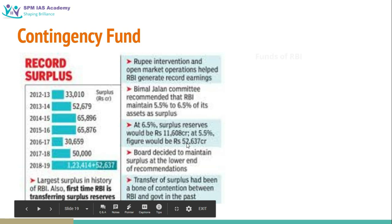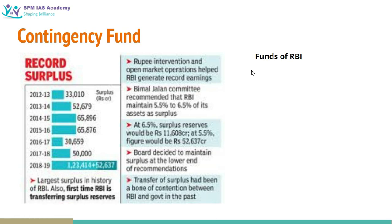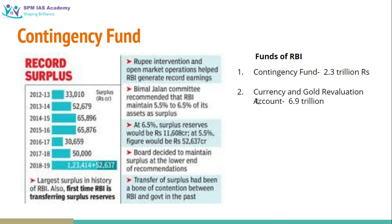Let us understand the contingency fund. Before understanding the transfer from the contingency fund, let us look at the types of funds available with RBI. The first type is the contingency fund — right now RBI has about 2.3 trillion rupees as contingency fund. The second fund is the currency and gold revaluation account. RBI keeps some gold as well, and this currency and gold fund is kept for extraordinary emergency circumstances or financial stress that may develop in the country.